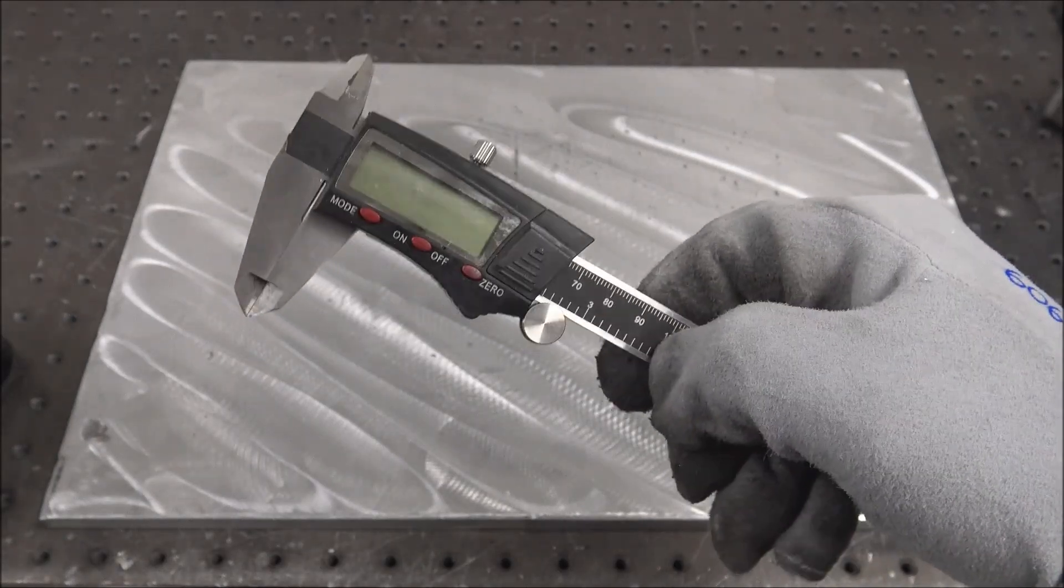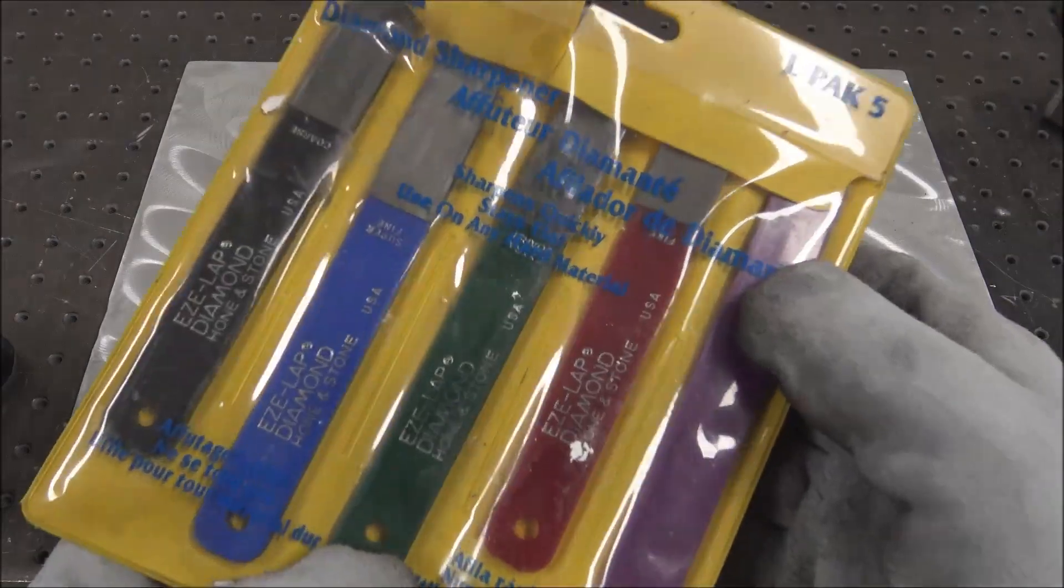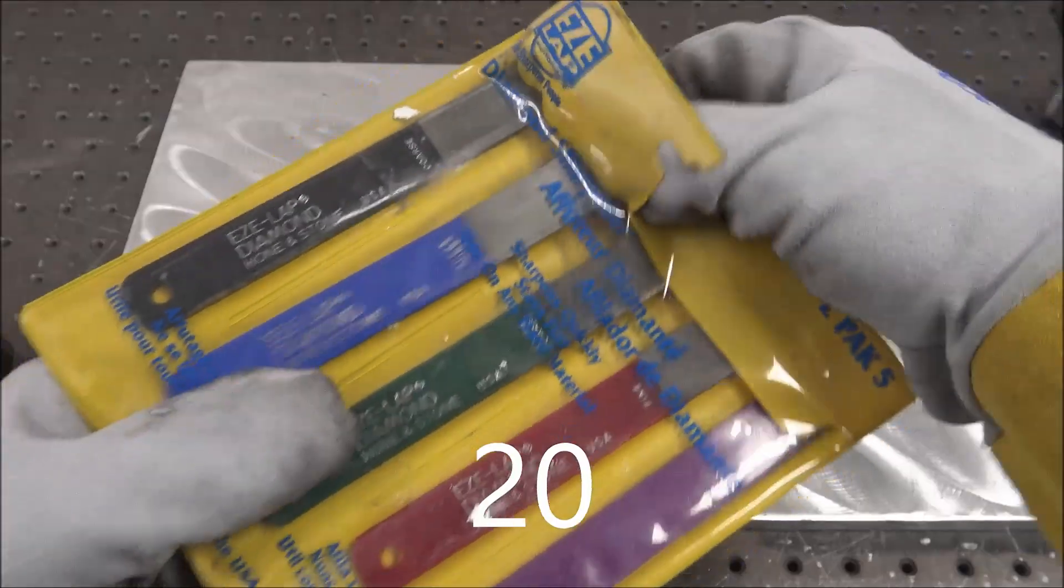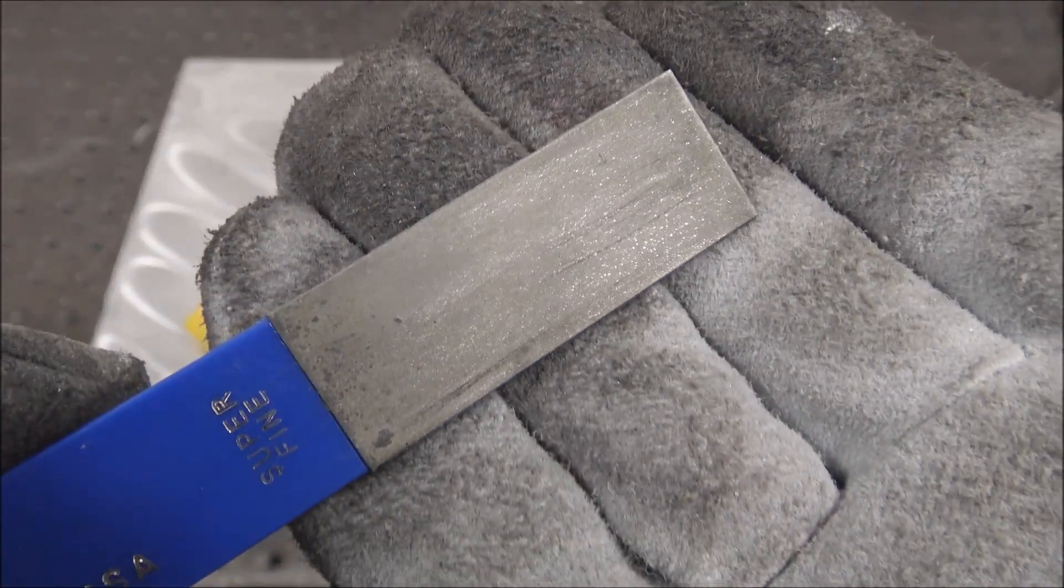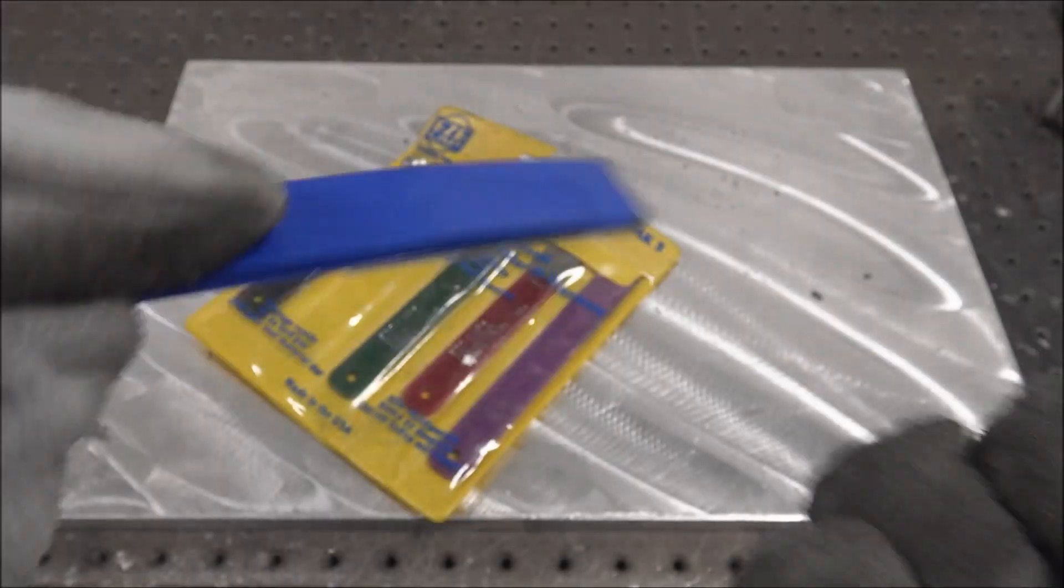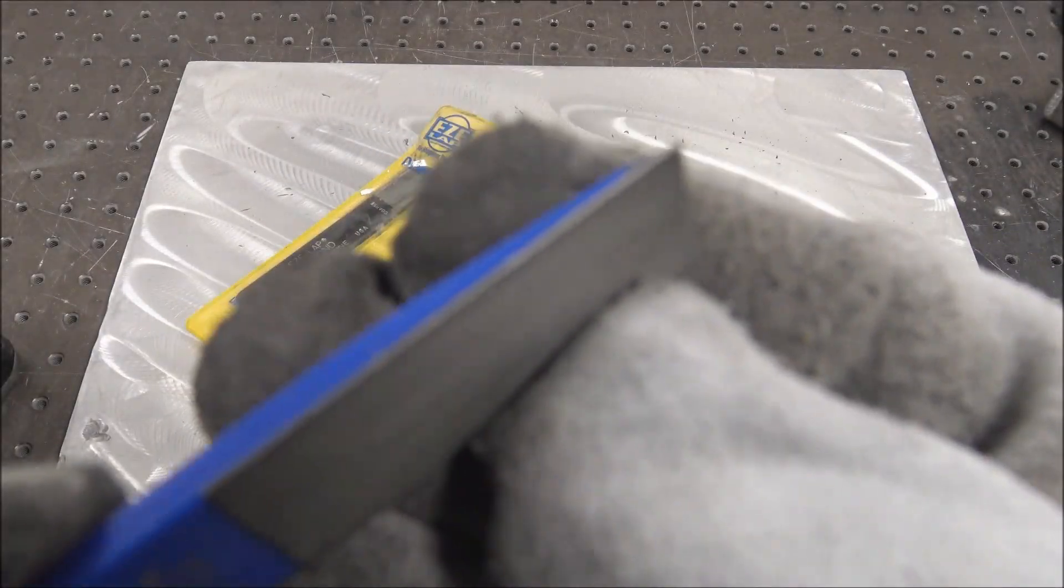EZE-LAP diamond sharpening boards. These work real good. You can sharpen end mills with these, or just really intricate work where they have a sharp crisp edge on them for sanding and touching up all sorts of stuff.